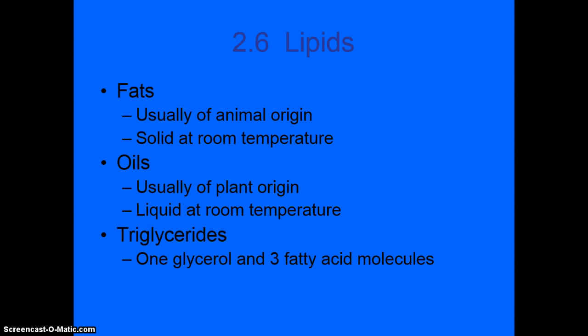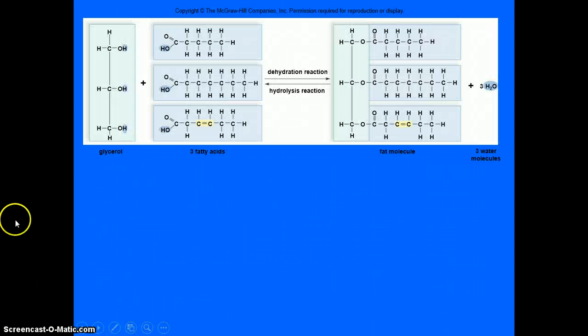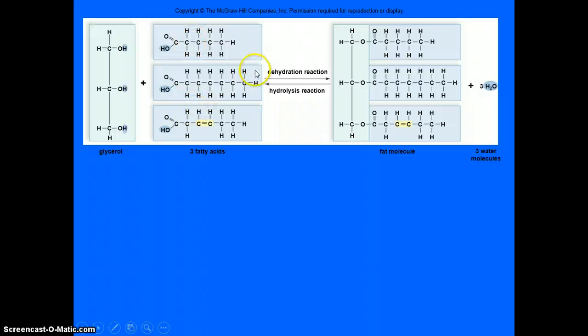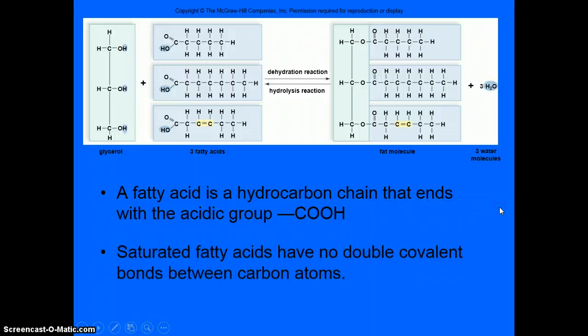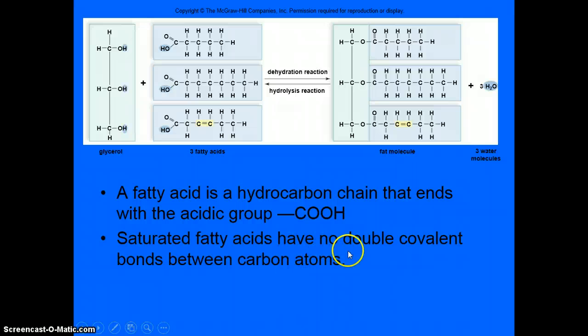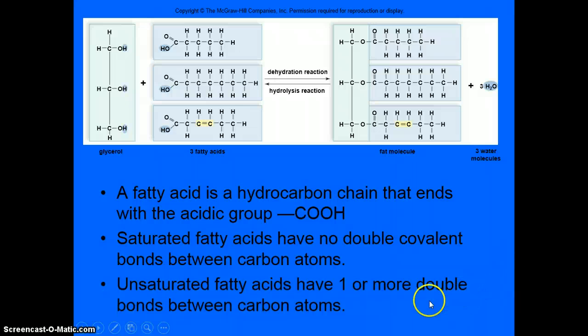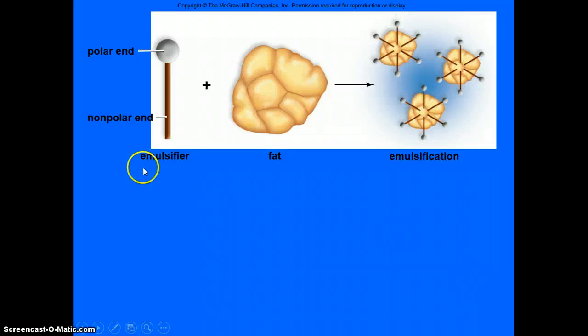Triglycerides are made up of one glycerol and three fatty acid molecules. So here's a glycerol. Here's three fatty acid molecules. It goes through a dehydration reaction and makes a fat molecule, and it gives off the three waters. A fatty acid is a hydrocarbon chain that ends with the acidic group COOH. Saturated fatty acids have no double covalent bonds between the carbon atoms. Unsaturated have one or more double bonds.